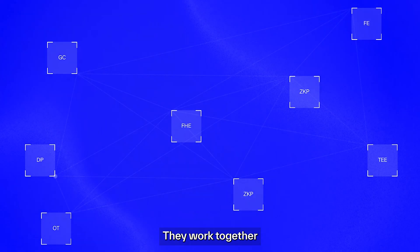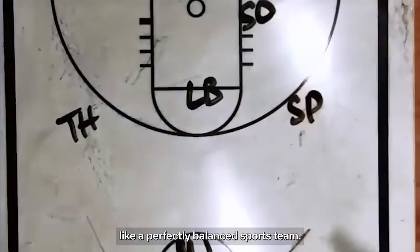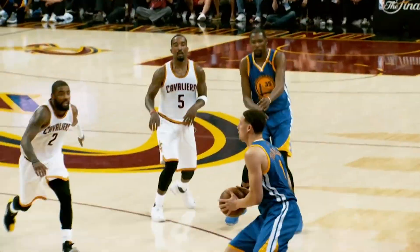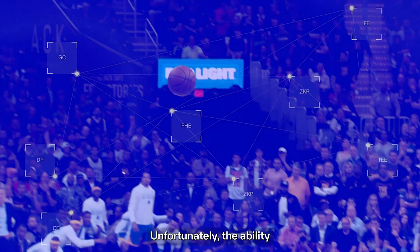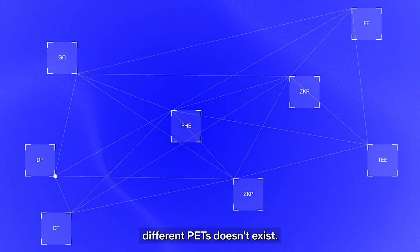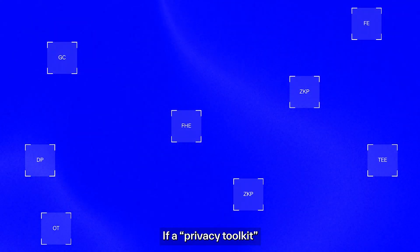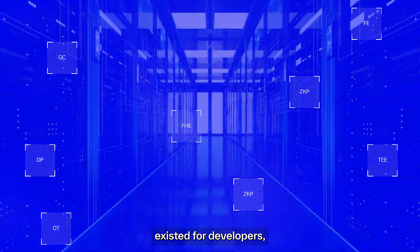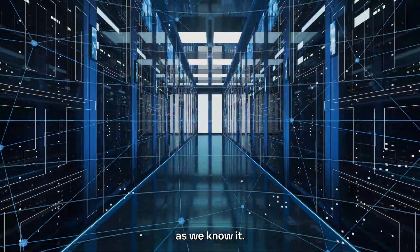We combine them. They work together, like a perfectly balanced sports team. Unfortunately, the ability to easily combine different PETs doesn't exist. If a privacy toolkit existed for developers, it would change the internet as we know it.